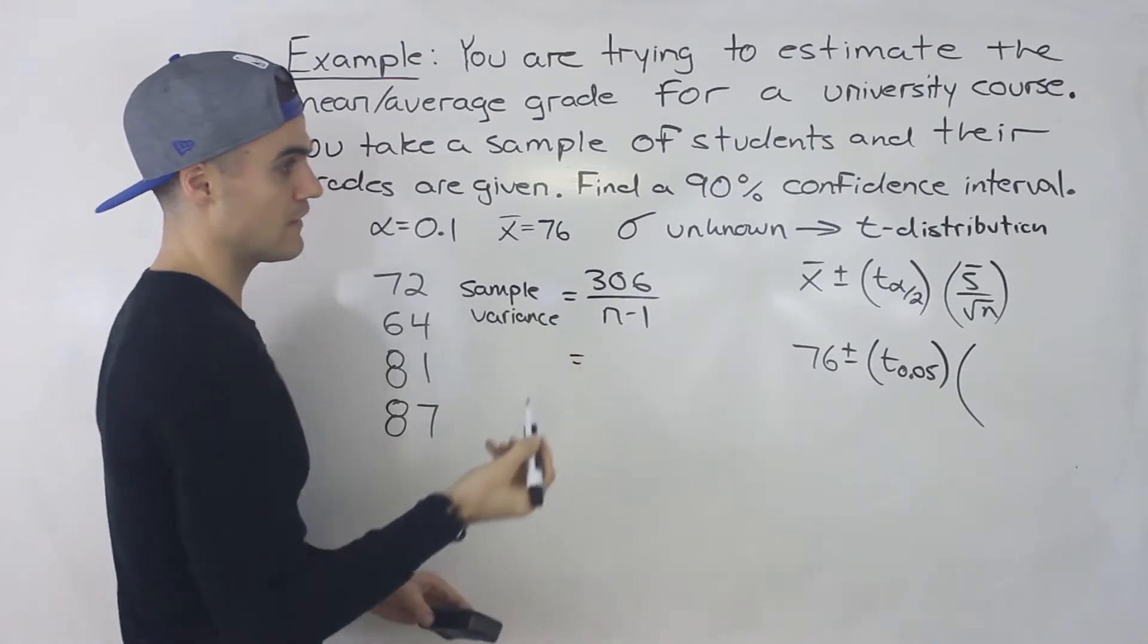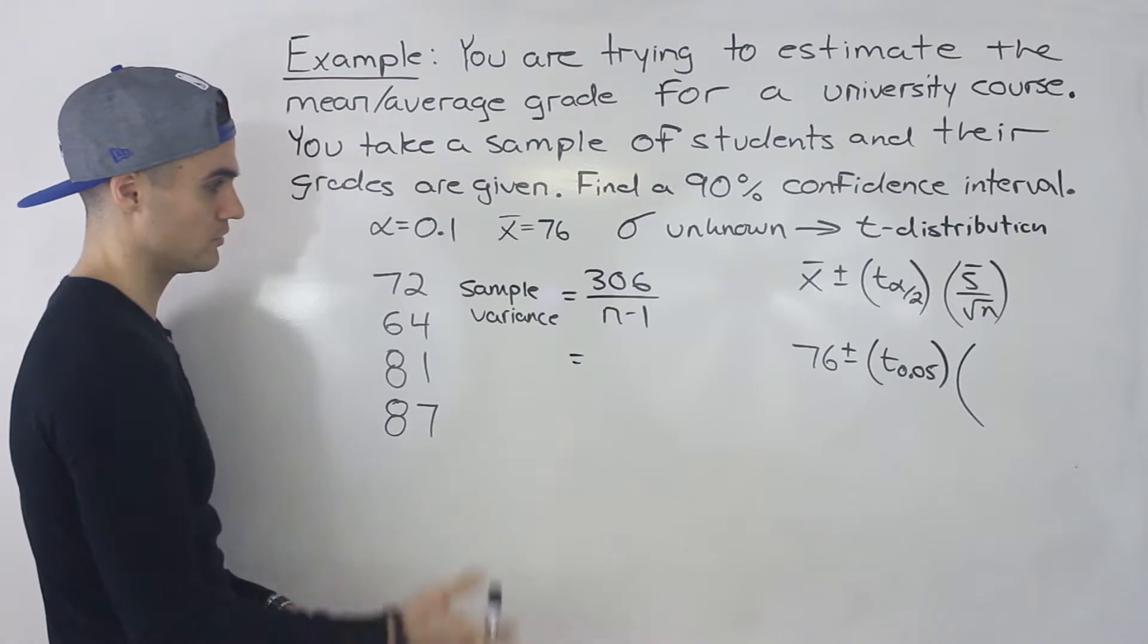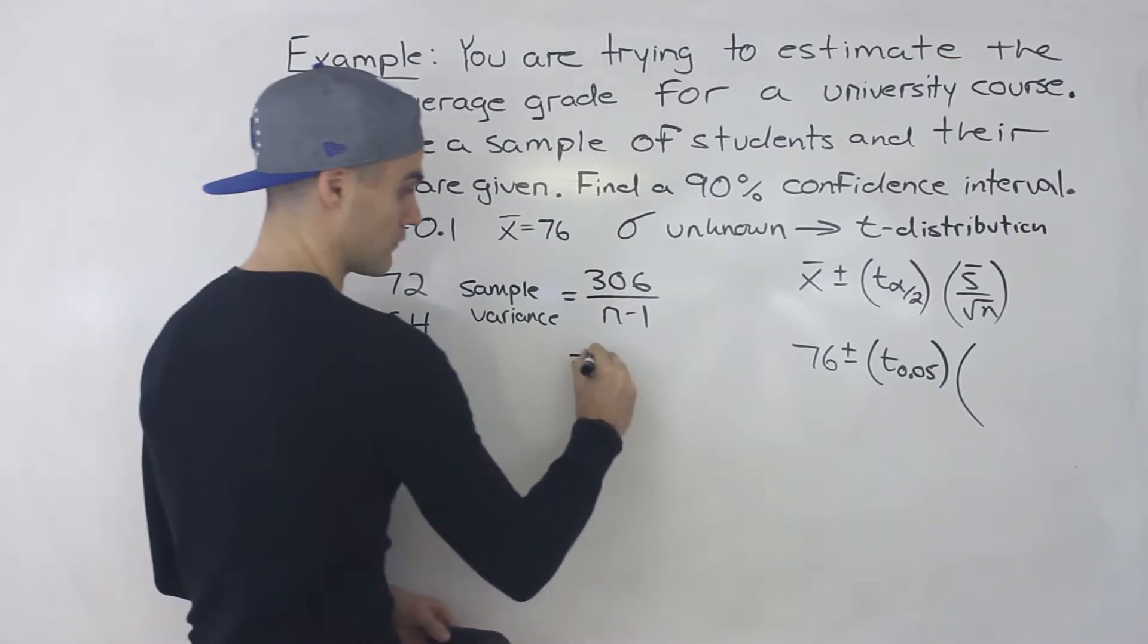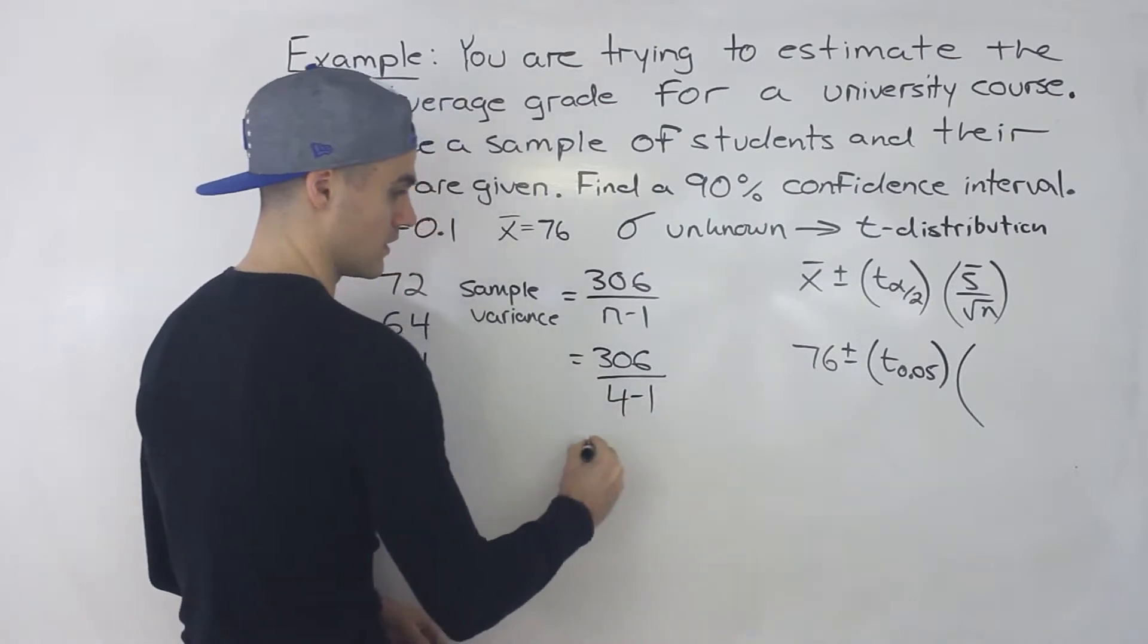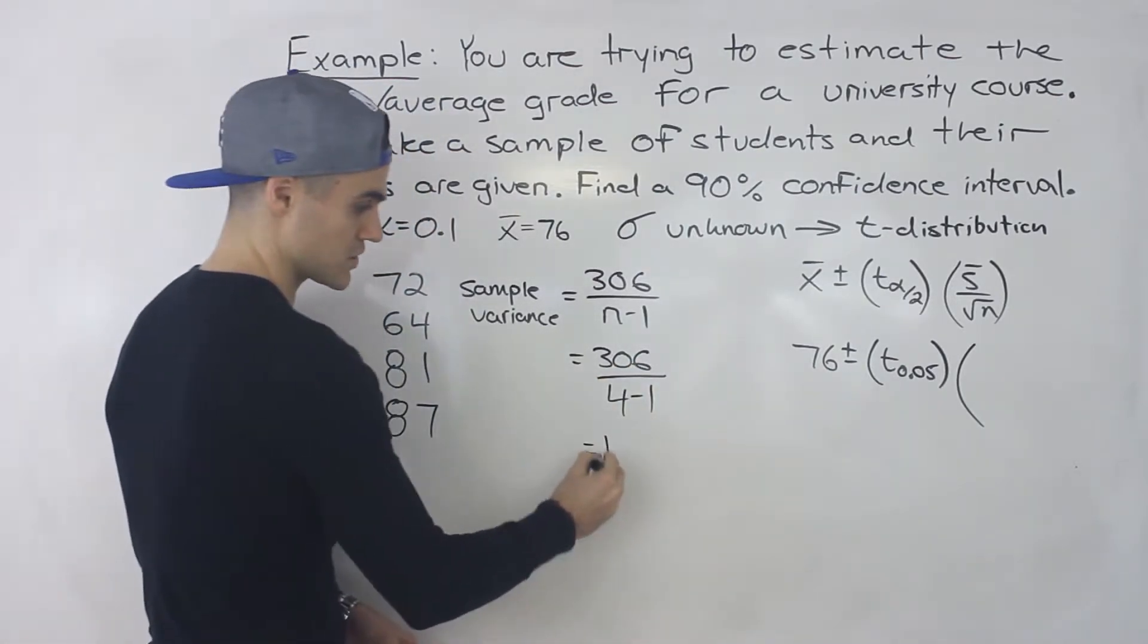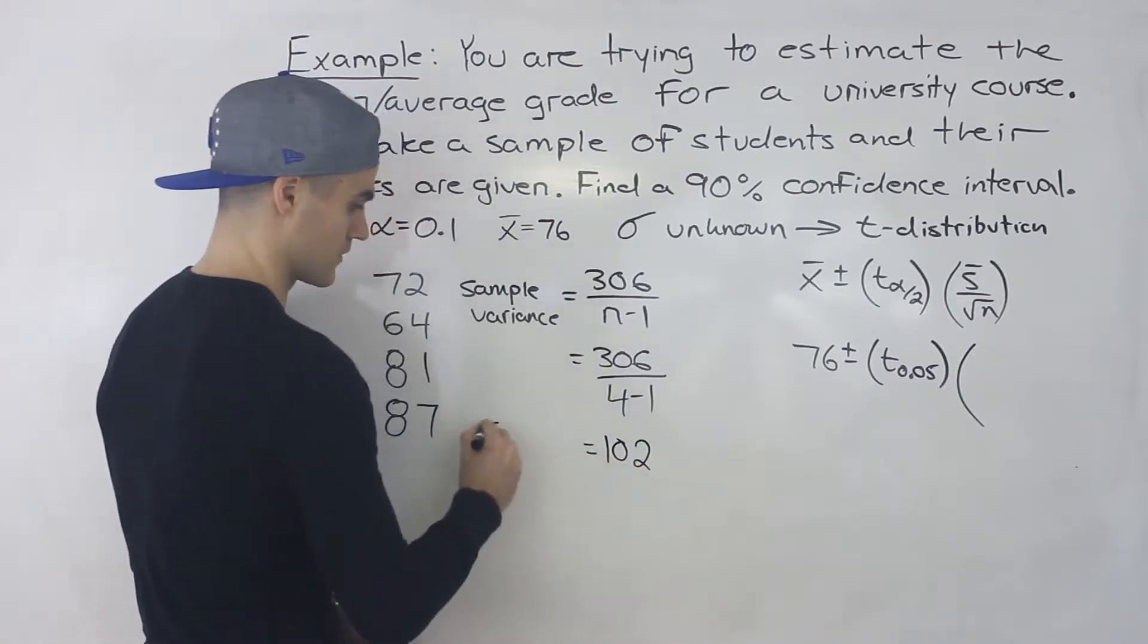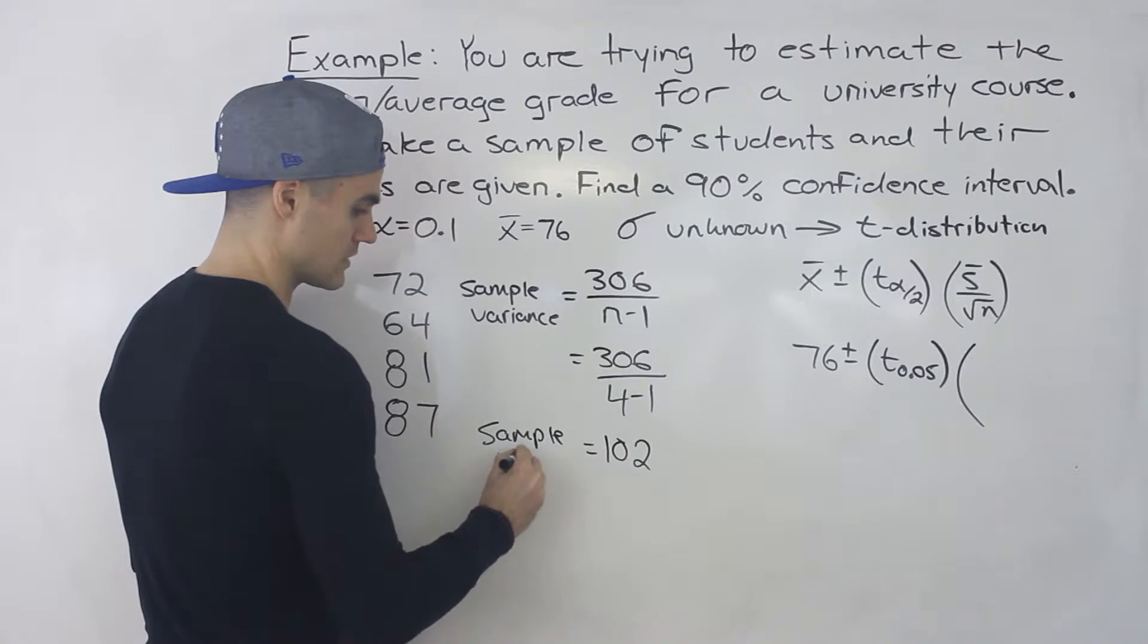And so the n value in this case is the number of units or the number of observations in the sample. It's 4 in this case. So we're going to have 306 over 4 minus 1, which is like 306 over 3, which gives us 102. So that is the sample variance right there.